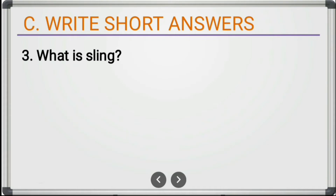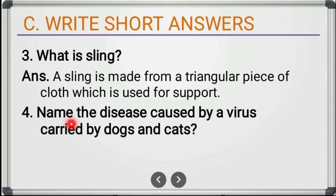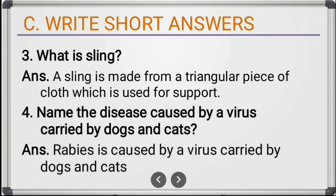Third short answer: what is a sling? A sling is made from a triangular piece of cloth which is used for support. Fourth: name the disease caused by a virus carried by dogs and cats. The answer is rabies — rabies is caused by a virus carried by dogs and cats.